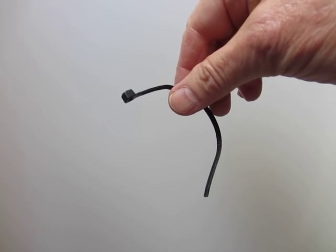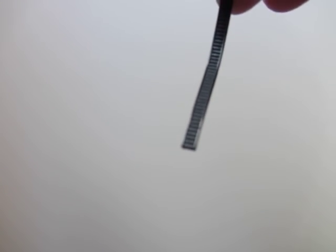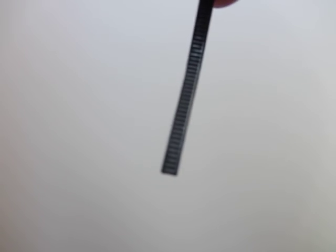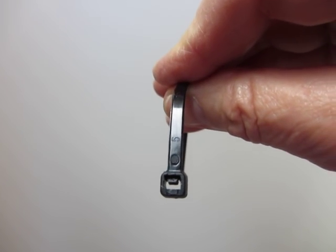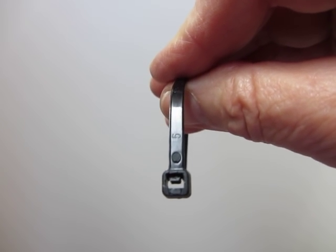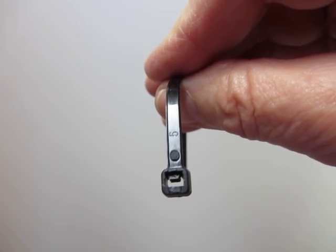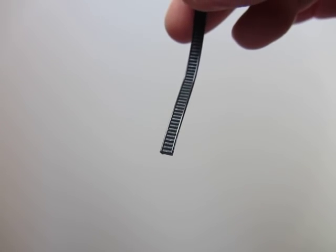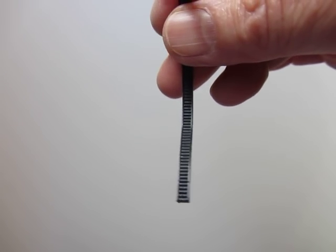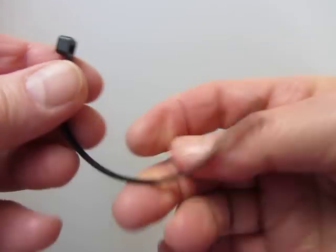A cable tie is a plastic strip that has ribbing like a washboard on one side and has a square hole in the other with a tongue that is the locking mechanism that's held against the ribbed edge when you put one in through the hole like this.